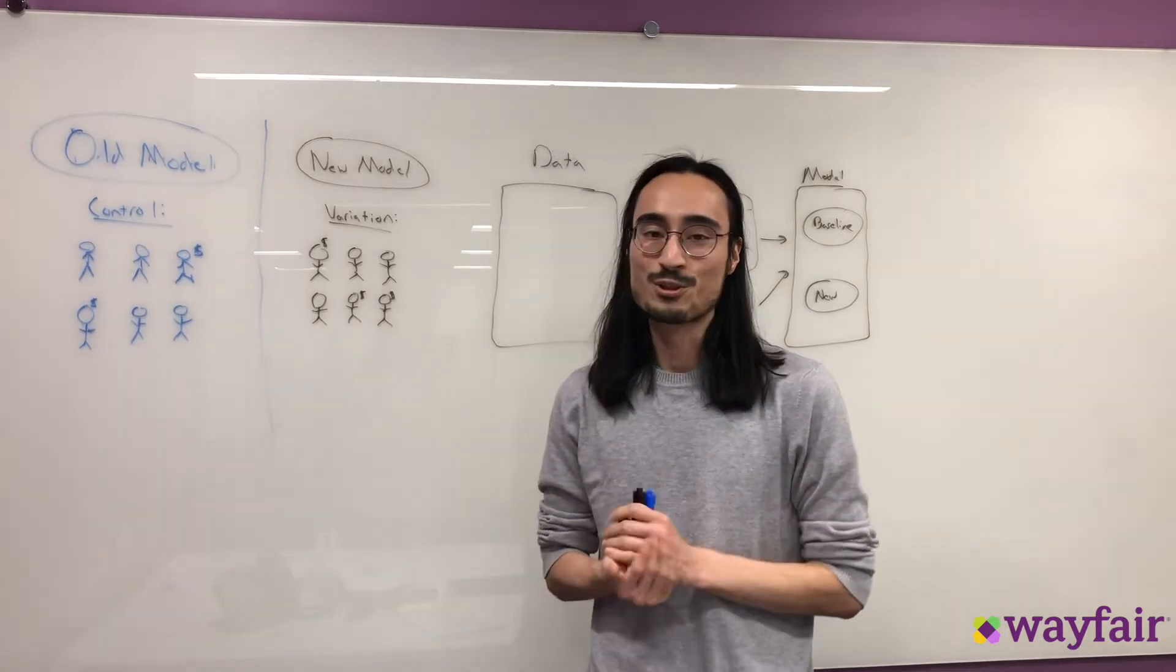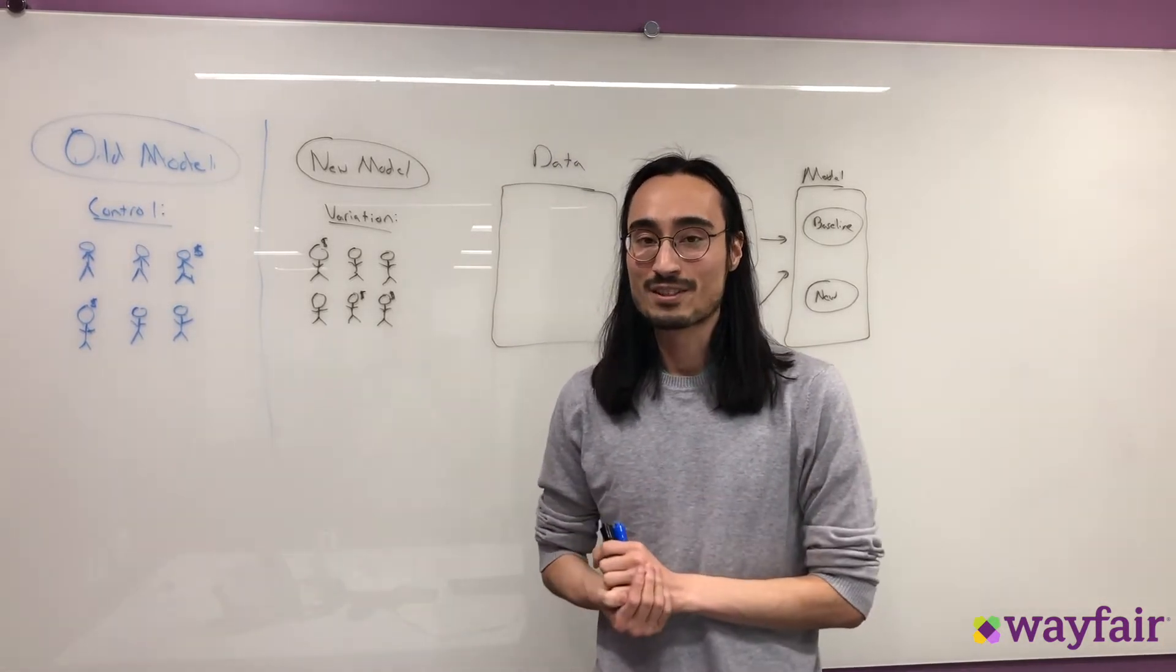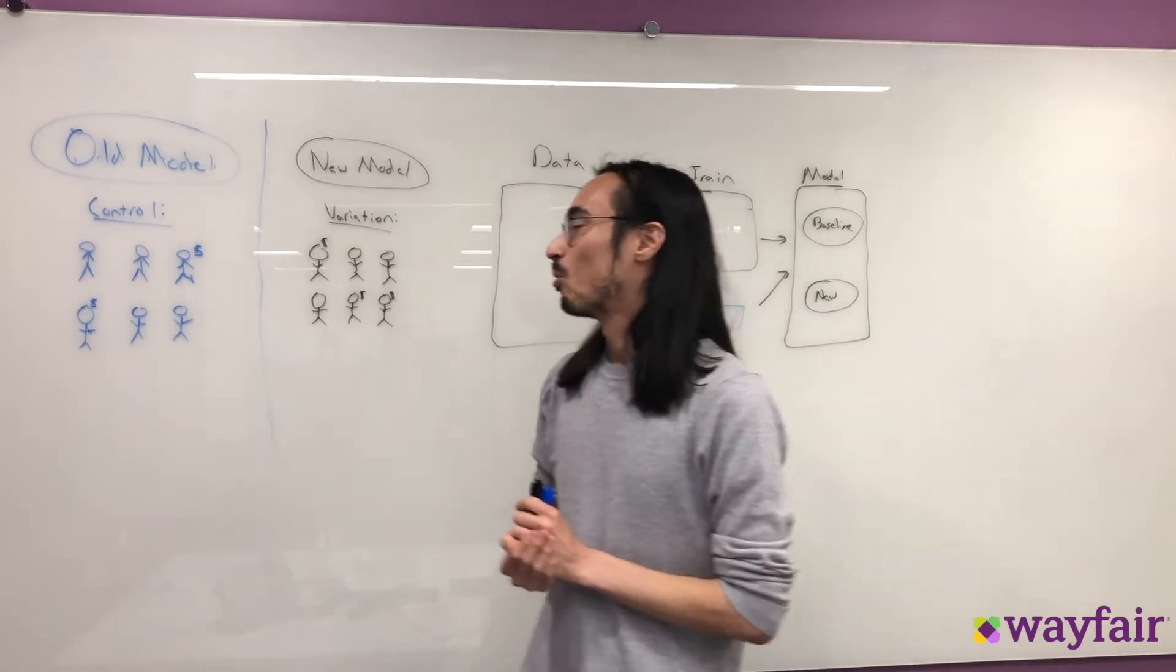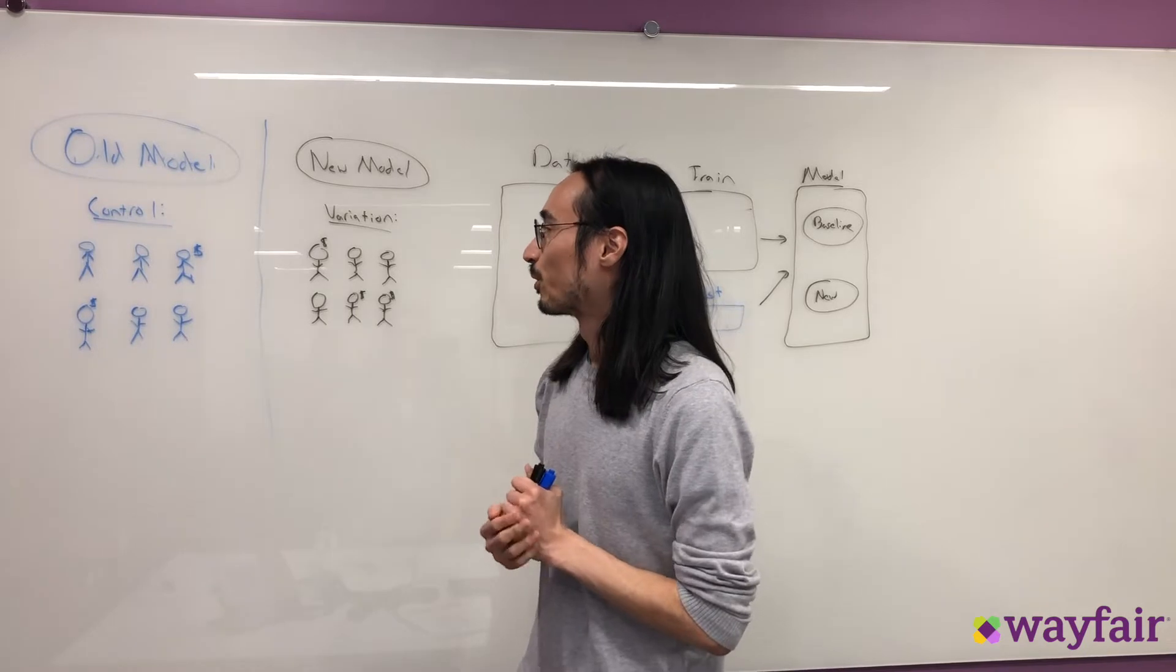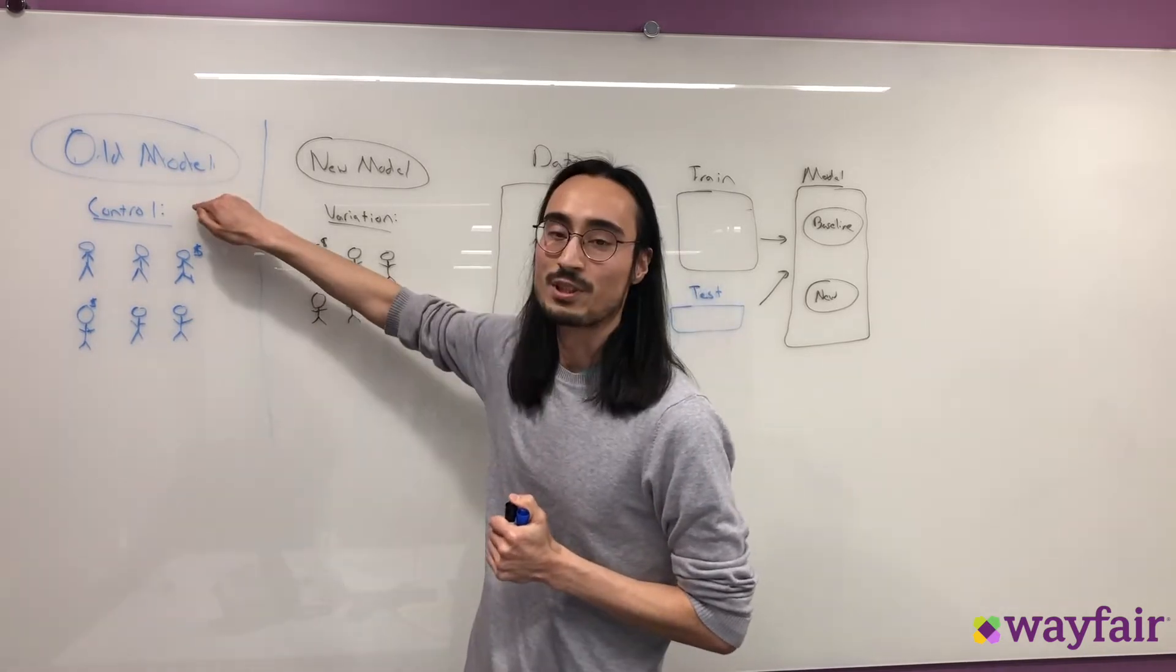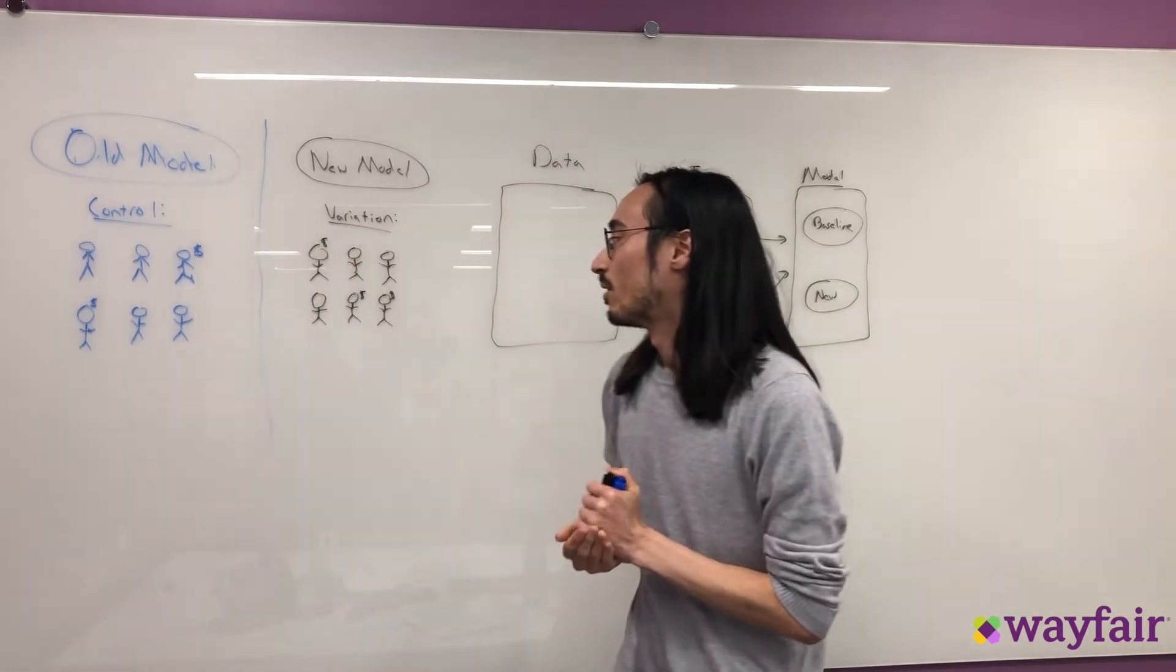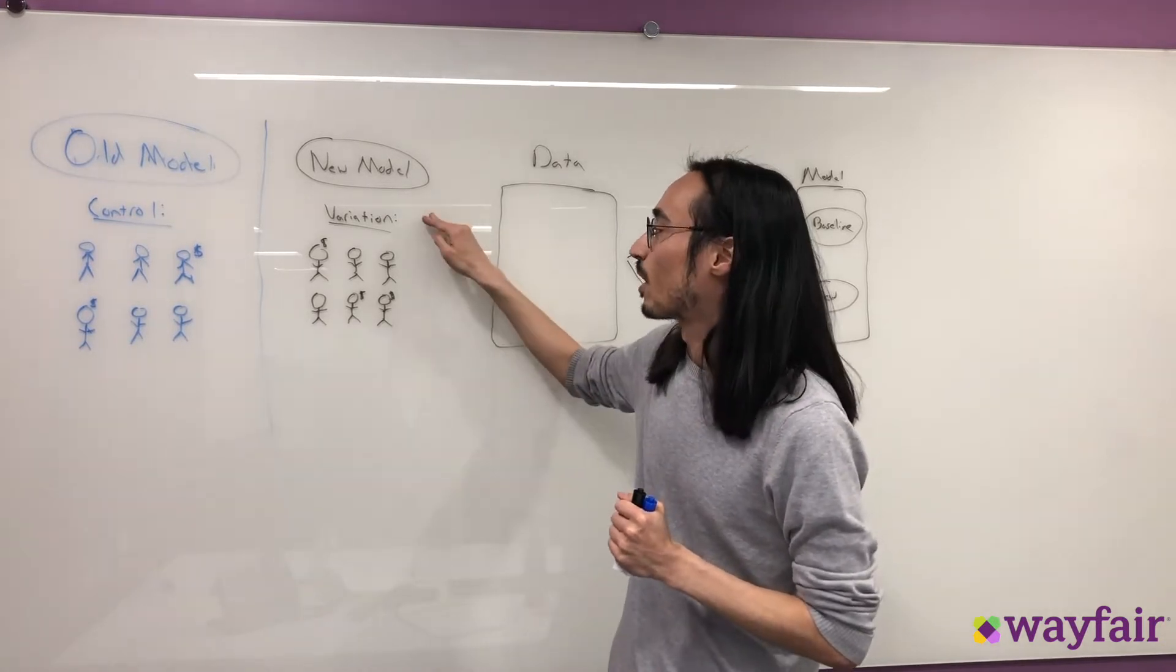A common approach to doing this is actually running an online A/B test. In an A/B test, we split the traffic into two groups. One group called the control gets recommendations from the old model. Another group called the variation gets recommendations from the new model.